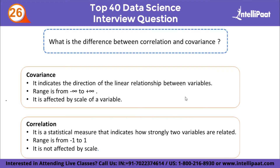What is the difference between correlation and covariance? Covariance shows the extent to which two variables are dependent on each other — higher the number, higher the dependency. Its range varies from minus infinity to infinity and it is affected by the scale of a variable. Correlation measures the strength of the relationship between two variables considering other conditions are constant. The range of Pearson correlation is from -1 to 1 and it is not affected by scale, unlike covariance.